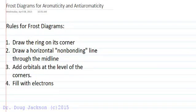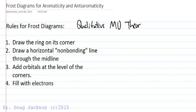Frost diagrams are mechanisms for qualitative molecular orbital theory that help explain aromaticity and anti-aromaticity in terms of a molecular orbital approach. Suppose we consider benzene as our first example.